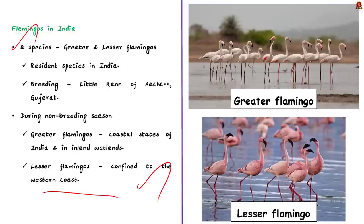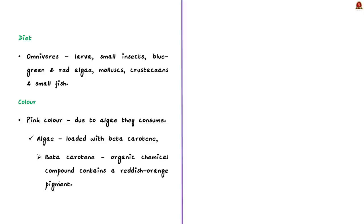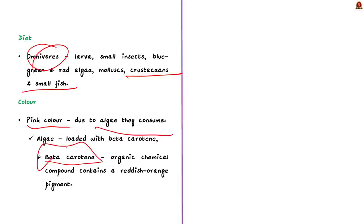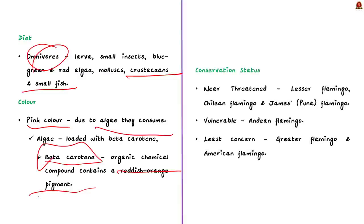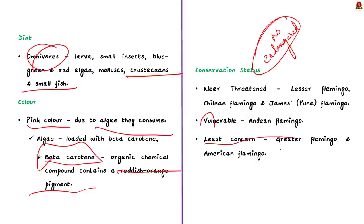During the non-breeding season, Greater Flamingos occur in the majority of coastal states of India and some inland wetlands, whereas Lesser Flamingos have restricted distribution mainly confined to the western coast — Gujarat and Maharashtra. Flamingos eat larvae, small insects, blue-green and red algae, molluscs, crustaceans, and small fish. Their tendency to eat both vegetation and meat makes them omnivorous. Flamingos are pink in color because of the algae they consume; the algae are loaded with beta-carotene, an organic chemical compound containing a reddish-orange pigment.